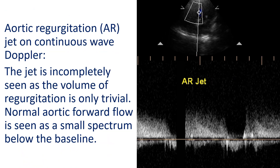Aortic regurgitation jet on continuous wave Doppler. The jet is incompletely seen as the volume of regurgitation is only trivial. Normal aortic forward flow is seen as a small spectrum below the baseline. Continuous wave interrogation is used because the velocity of an aortic regurgitation jet is much above the Nyquist limit of the pulsed Doppler system. Continuous wave Doppler can evaluate high velocity jets but cannot localize the exact site of the jet along the axis.